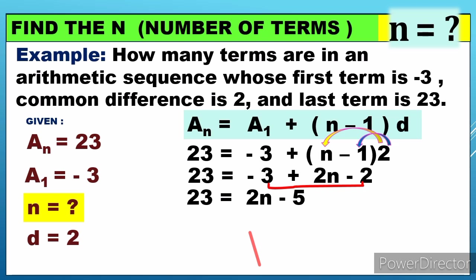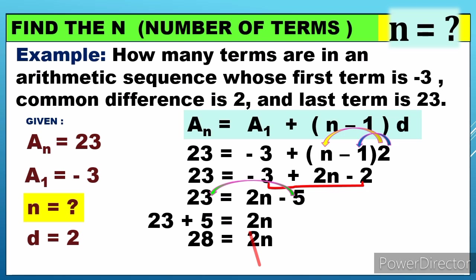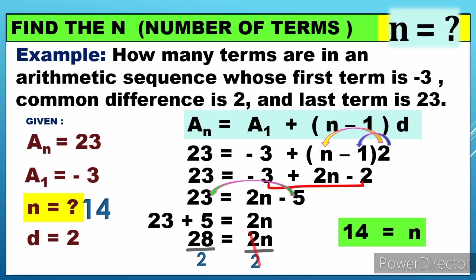Transposing negative 5 to the other side, it becomes positive 5: 23 plus 5 equals 2n, so 28 equals 2n. Dividing both sides by 2, n equals 14. Therefore, the number of terms is 14, and 23 is the 14th term of the given sequence.